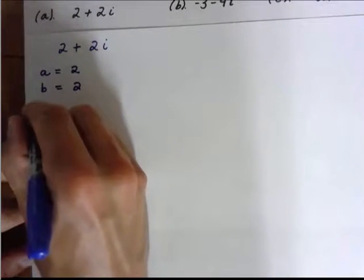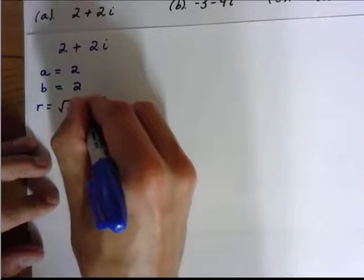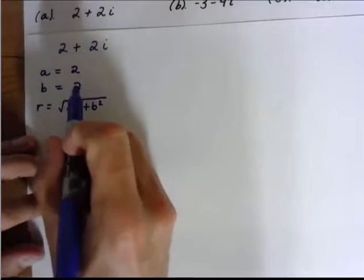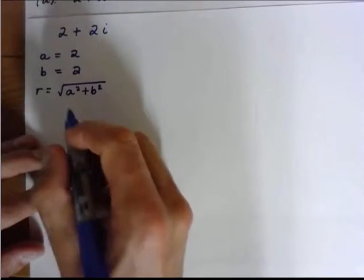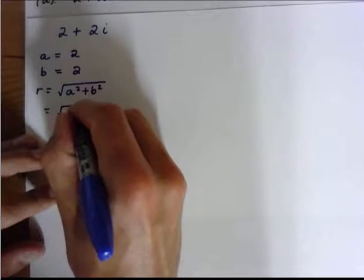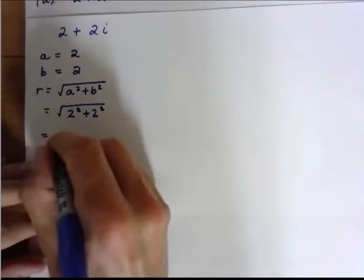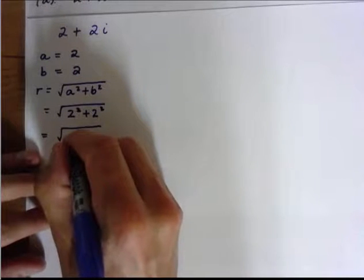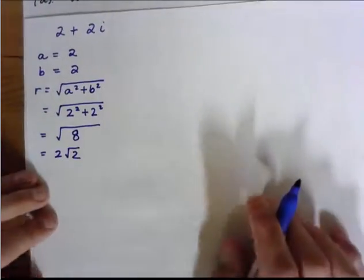So now I know that R is equal to the square root, the modulus there, of A squared plus B squared. In this you can ignore the sign because you're always squaring those two numbers. So just ignore whatever sign these are. So you're going to have the square root of 2 squared plus 2 squared. That is equal to the square root of 4 plus 4, which is 8, or 2 root 2 after simplifying.